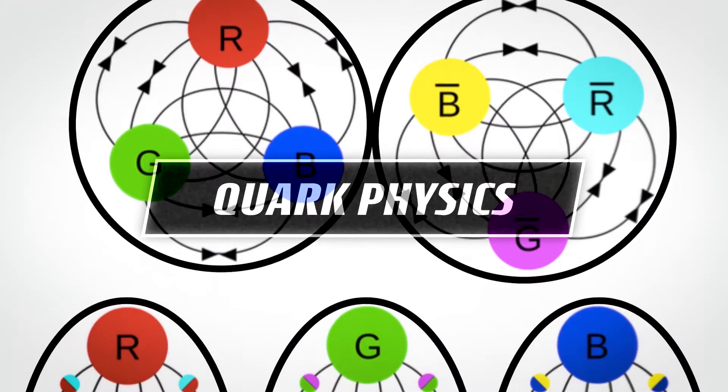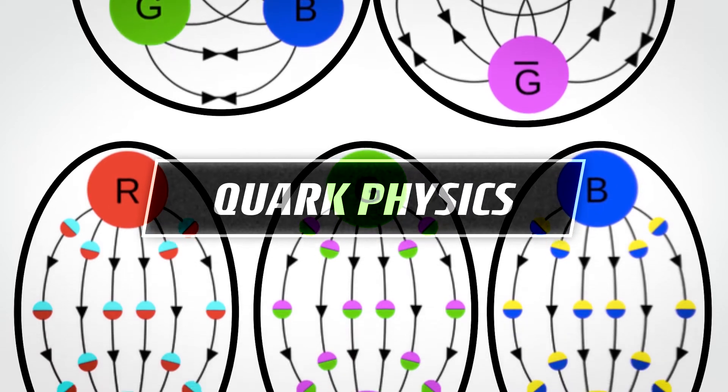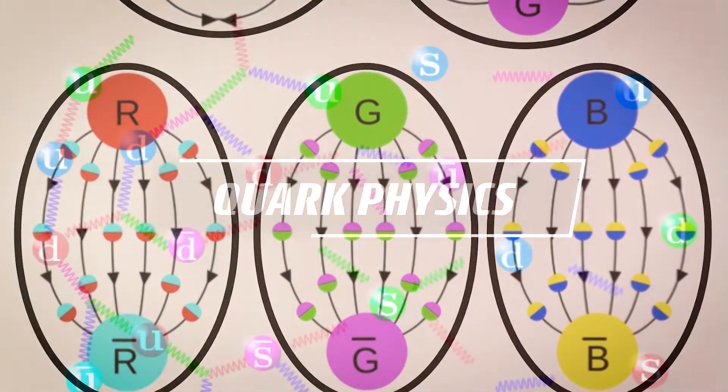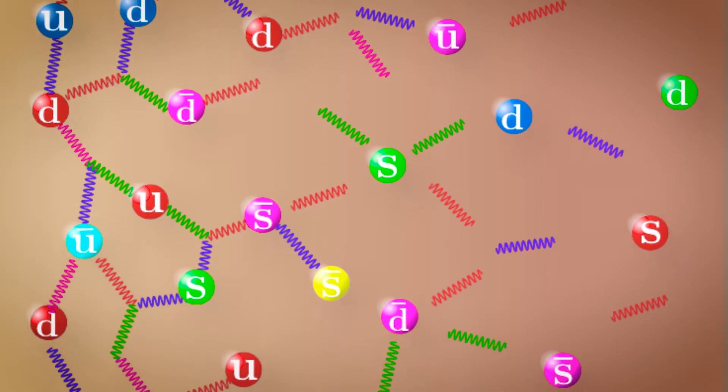Shortly after the Big Bang, temperature was around 2,000 billion degrees. In such high-temperature conditions, hadrons melt into a soup of quarks and gluons. And this is a new state of matter called quark-gluon plasma.